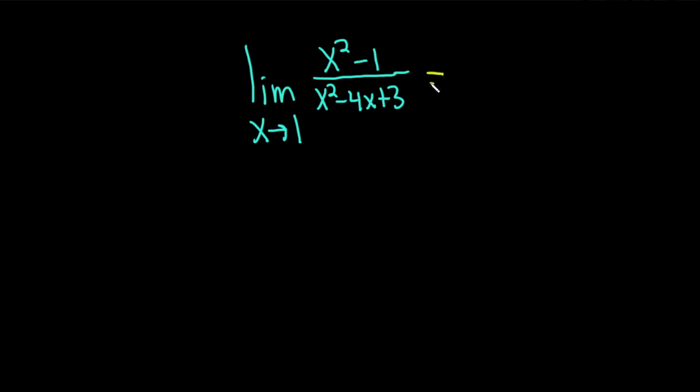So if we do that, we get 1 squared minus 1, which is just 0, and on the bottom we get 1 squared, which is 1, minus 4 times 1, which is 4, plus 3.